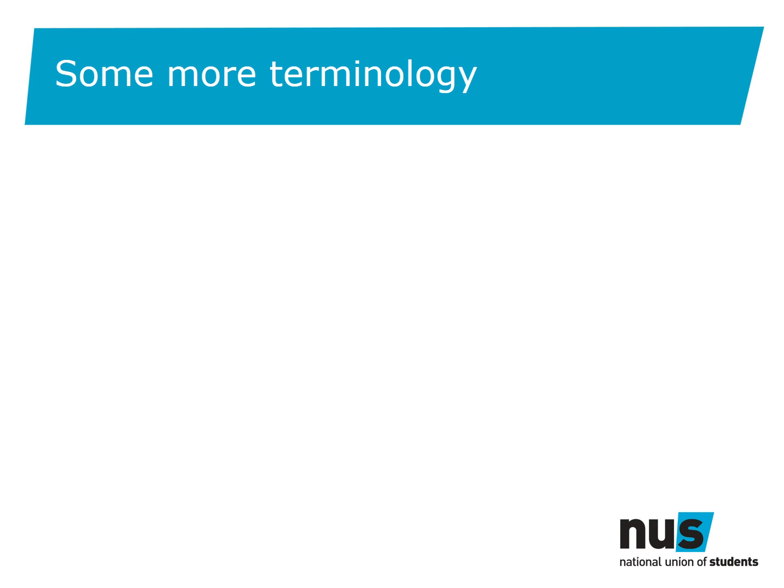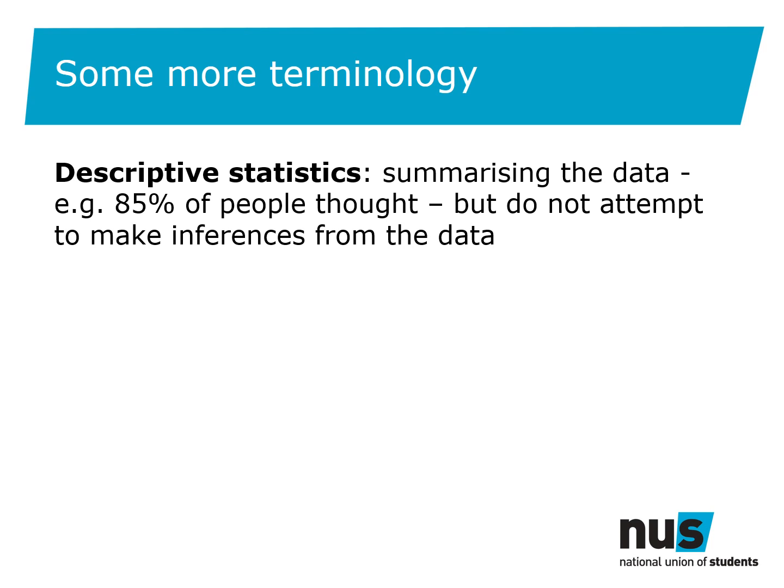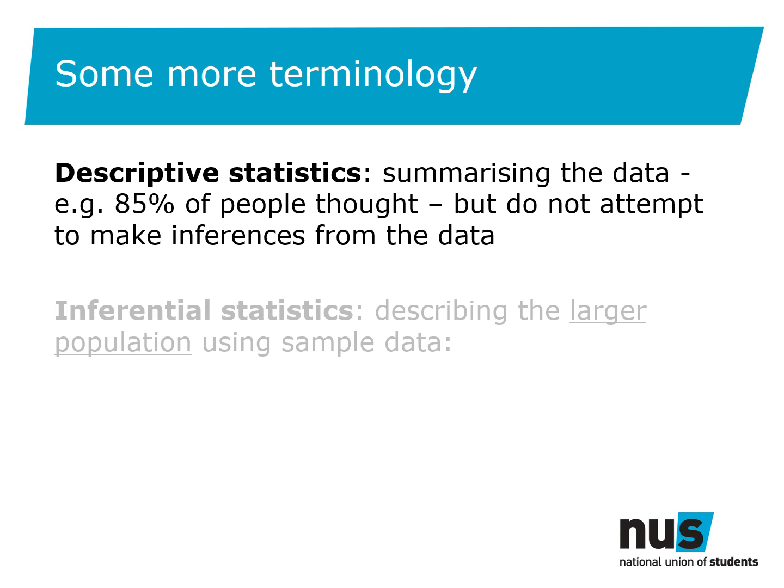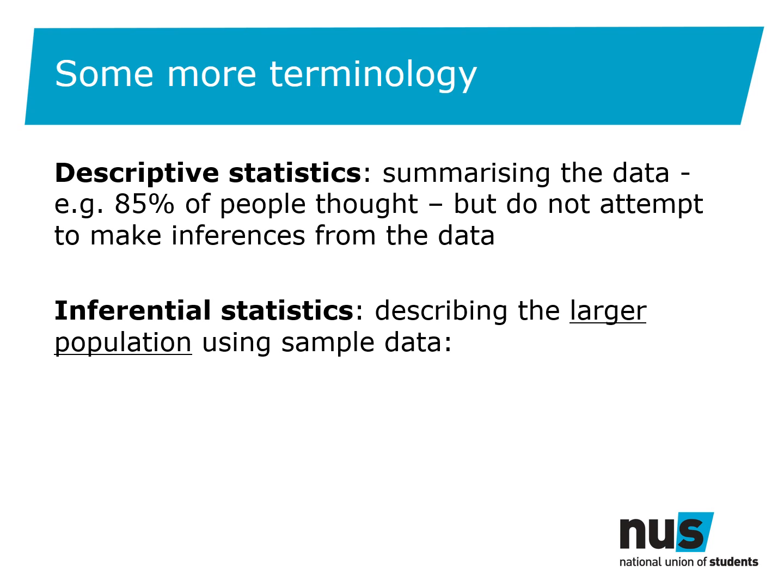When talking about statistics we refer either to descriptive or inferential statistics. Descriptive statistics do just that — they describe the findings from the sample but don't attempt to infer anything about the broader population. For example, saying 85% of survey respondents thought something would be a descriptive statistic. Inferential statistics attempt to take the results from your sample and infer things about the larger population. Inferential statistics relies on a sound method, good analysis and interpretation, because you're inferring things about the population at large using what you've collected about a smaller number of people.